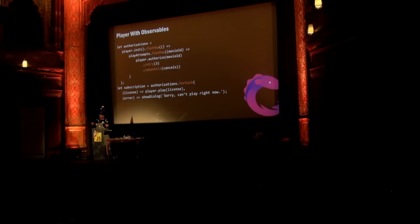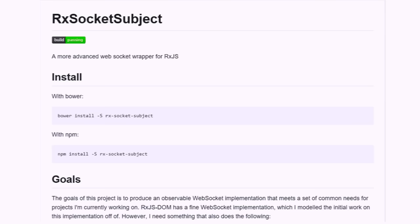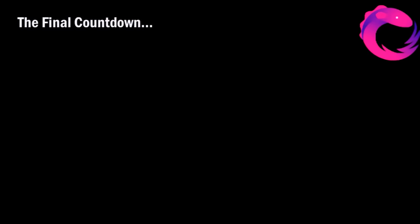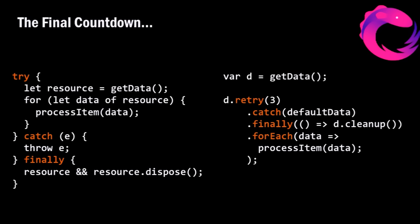They also had problems dealing with errors and WebSockets. Netflix created a WebSocket subject where you can hand it multiple endpoints and it keeps failing over until it gets something. You can listen and decide when to send data. And yes, you can do try-catch-finally. For example, in a constrained environment where offline matters, you can get default data, do cleanup in finally, and process each item as it comes through.